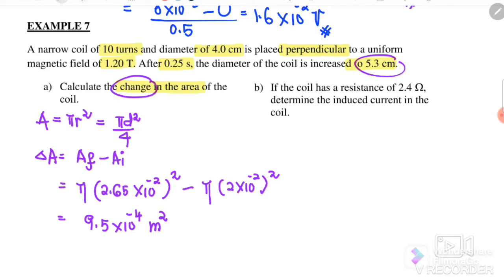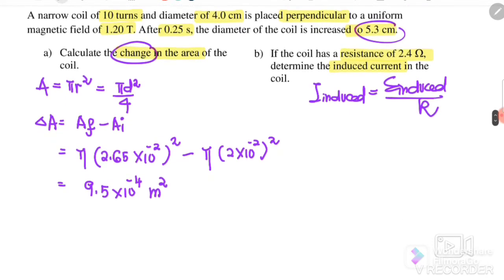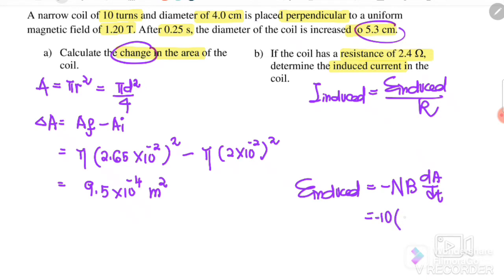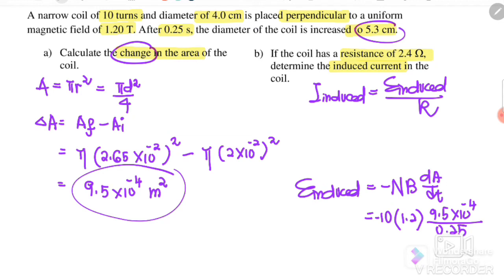Part B: if the coil has resistance 2.4 Ω, find the induced current. First find the induced EMF. Since A is changing: EMF = −N·B·dA/dt. Substituting: N = 10, B = 1.2, dA = 9.5×10⁻⁴, dt = 0.25 s. Induced EMF = −4.56×10⁻² V.